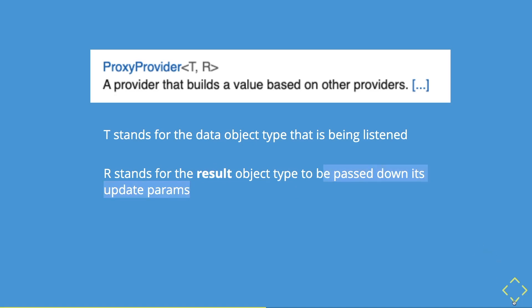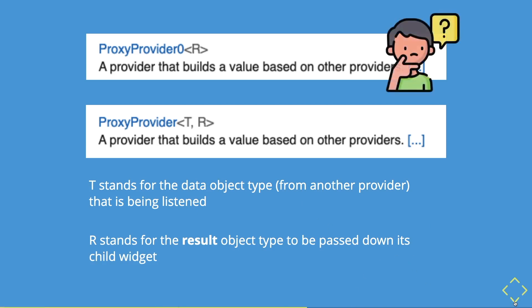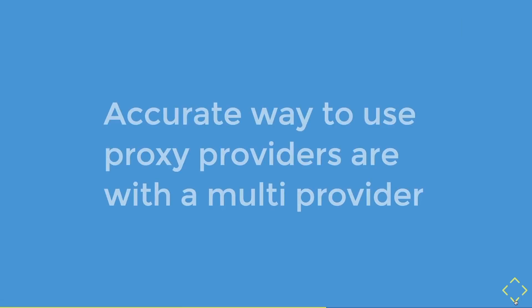If you compare it with proxy provider zero, it only has an R but no T, which means it can only take the data from a provider directly. The documentation says that proxy provider zero provides or builds a value based on other providers. But from our earlier example, we can build it not from a provider but from external values inside a widget. Therefore, the accurate way to use proxy providers — not the zero — is within a multi-provider.